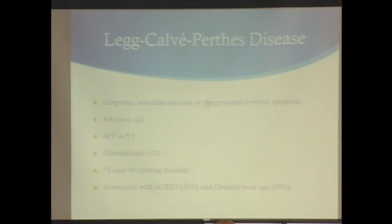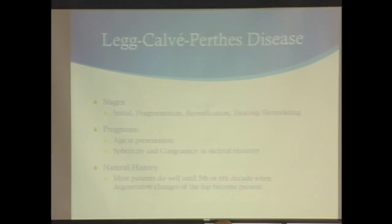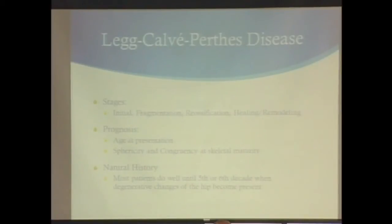Perthes disease is idiopathic avascular necrosis of the proximal femoral epiphysis. It typically presents between ages four and eight, predominantly in boys, and is bilateral in only 12% — always at different stages on each side. It may be caused by a bleeding or clotting disorder, and studies show association with ADHD and delayed bone age. There are x-ray stages: initial, fragmentation, reossification, and healing. Prognosis depends on age — if less than six, good chance of good outcome; greater than six, less favorable. Outcome depends on sphericity and congruity of the hip joint at skeletal maturity.